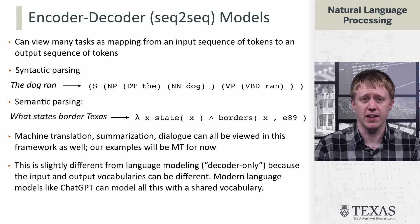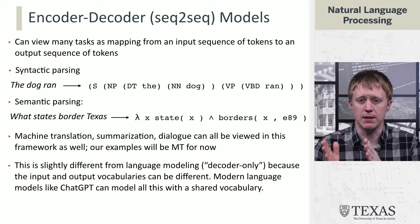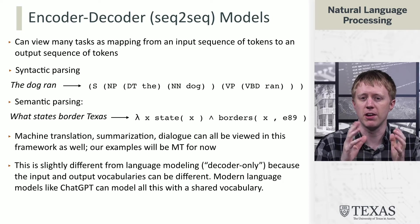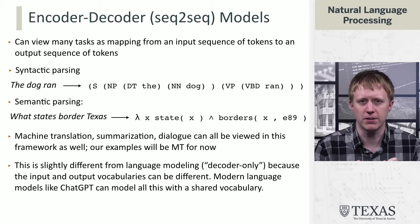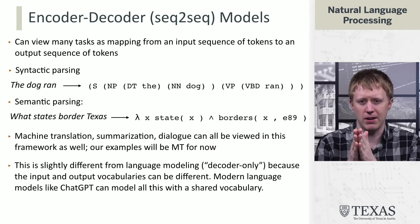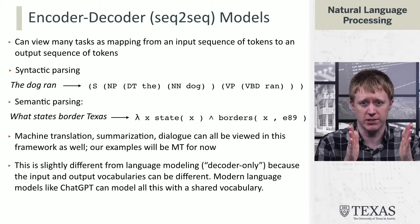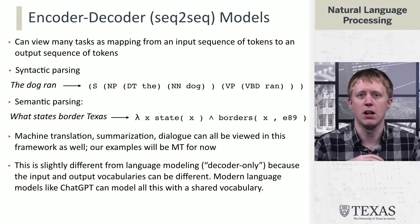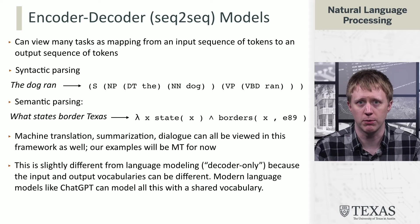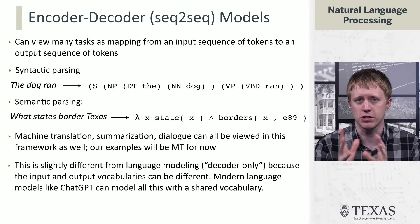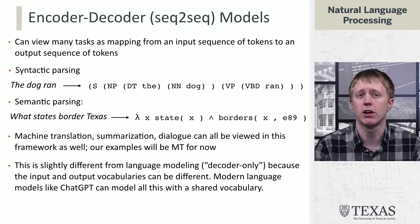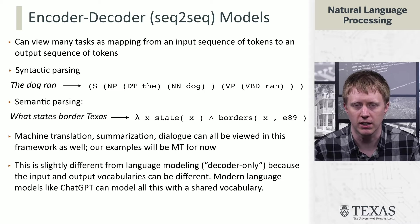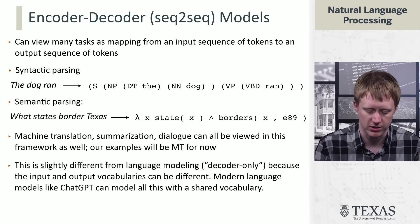Conceptually, we think about the inputs and outputs of sequence-to-sequence models as very distinct things compared to language modeling, where there's just one sequence and you crank through and autocomplete it. Models like ChatGPT actually do all of this as language modeling with a shared vocabulary, so the distinction has been a little blurred, but it's still important to understand these distinctions in the literature.